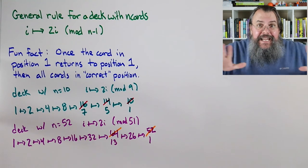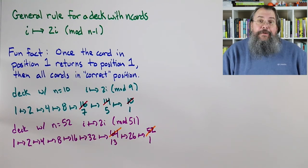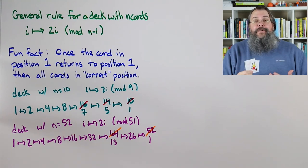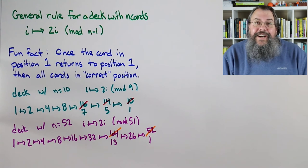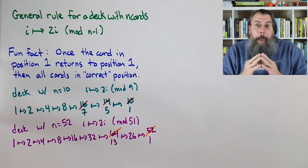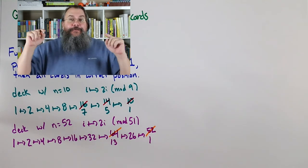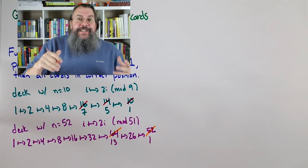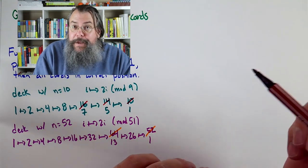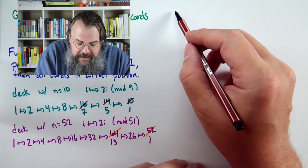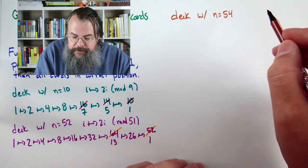That's if we have a deck with 10 cards. Now we have a good answer about where do the cards go. Now what happens in general? Well in general we say, look, we're going to have where the card in position i is going to go to 2 times i, and modulo n minus 1. So see, like 10 cards became 9. Now how do we use this? And here's a really fun fact. Once the card that's in position 1 returns back to position 1, all the cards are back to where they started. Remember, position 1 is not the top card, it's actually the card just below.